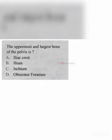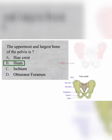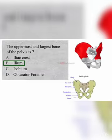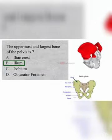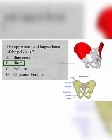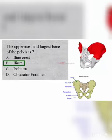The uppermost and largest bone of the pelvis is: A. Iliac crest, B. Ilium, C. Ischium, D. Obturator foramen. The correct answer is B. Ilium. The ilium is the largest part of the hip bone and makes up the superior part of the acetabulum.